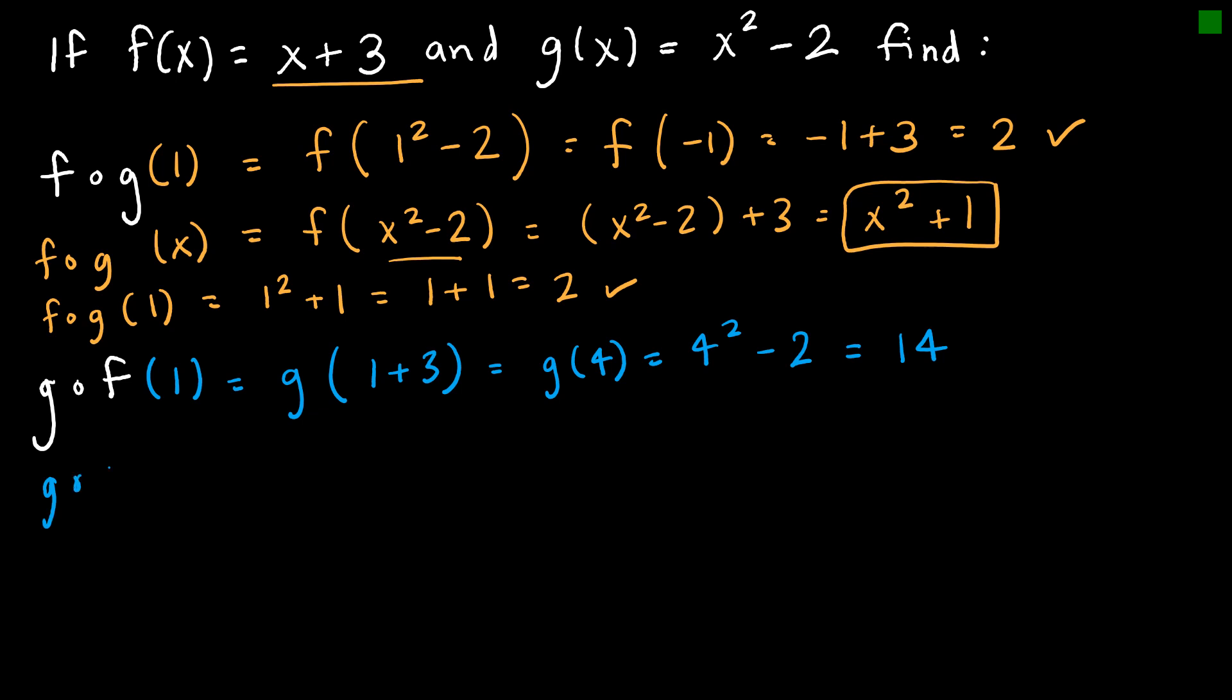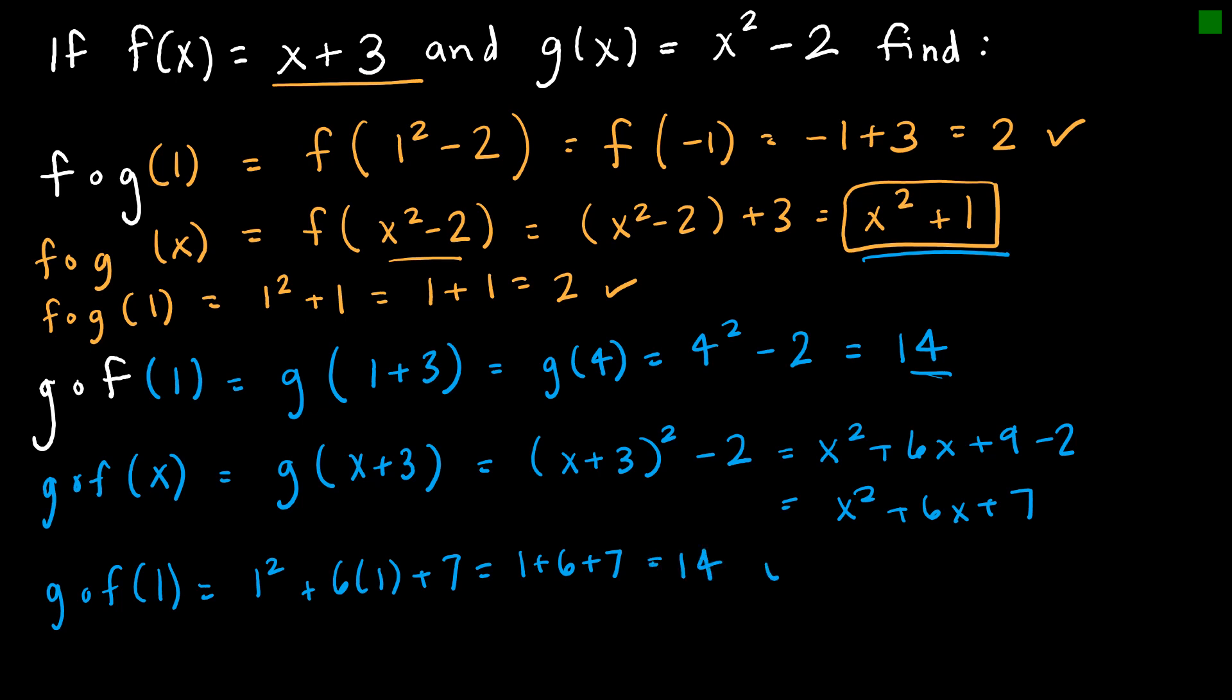So now let's take a look at g of f of x instead and see if we can come up with a function like we did for f of g of x where we can just plug in the value instead of having to go through all of the steps. So I want to do g of x plus 3 which means my x is now x plus 3 so x squared minus 2 looks like this. So I can leave it like this or I could foil this out: x squared plus 6x plus 9 minus 2 which is x squared plus 6x plus 7. Let's check our work. g of f of 1 which we already know should be 14, let's see if we get that again. 1 squared plus 6 times 1 plus 7 would be 1 plus 6 plus 7 which is 14 and so it checks out.